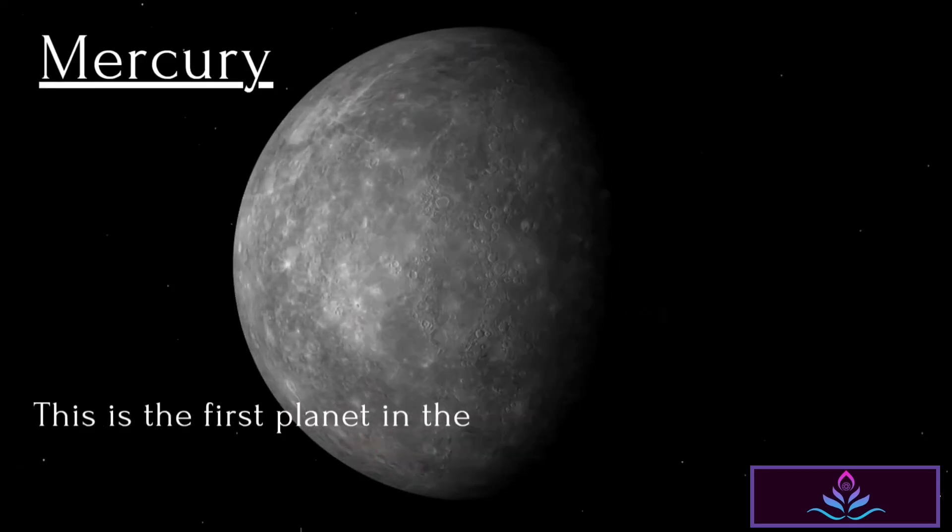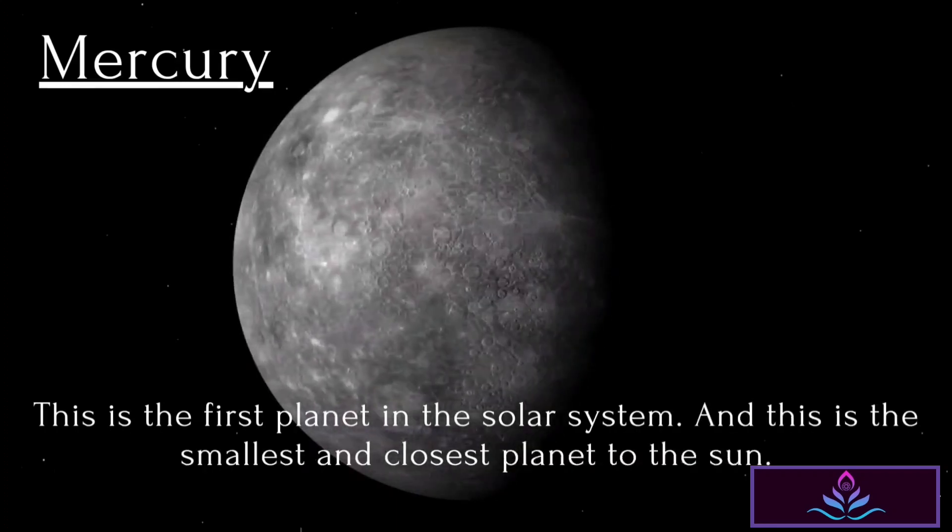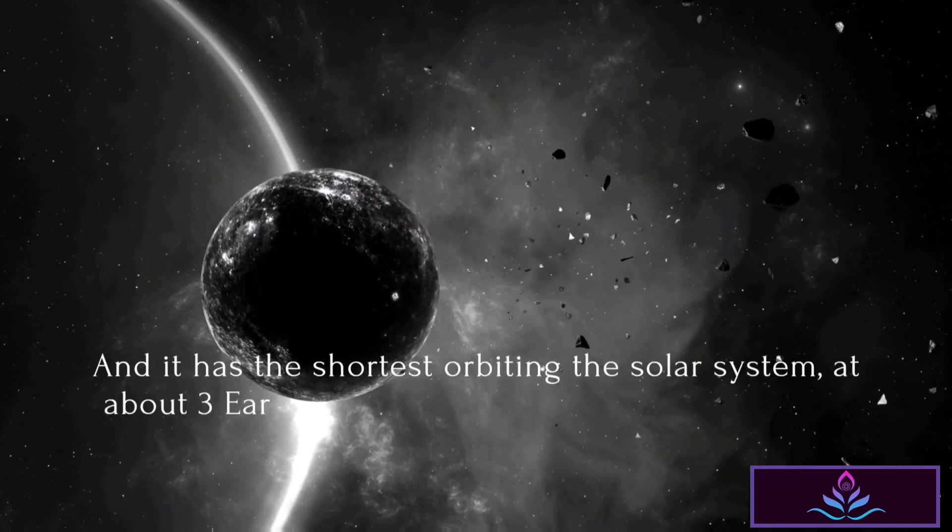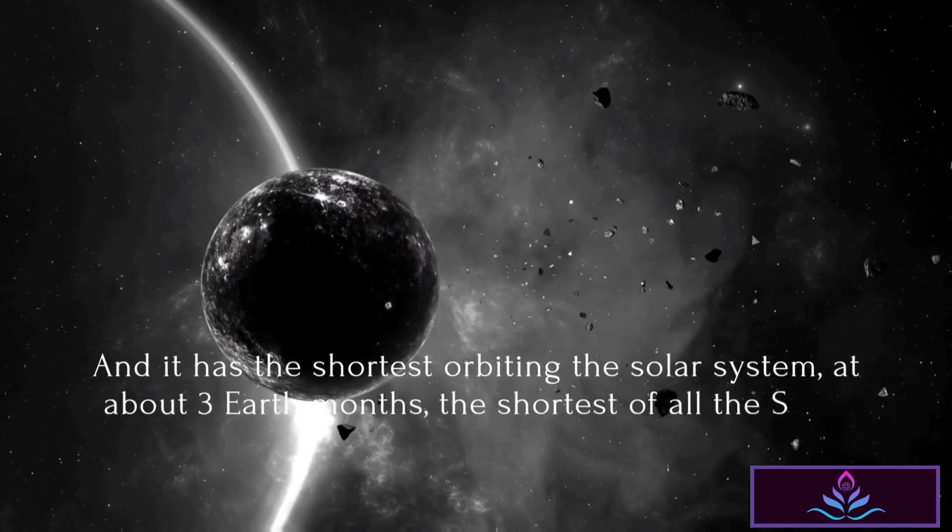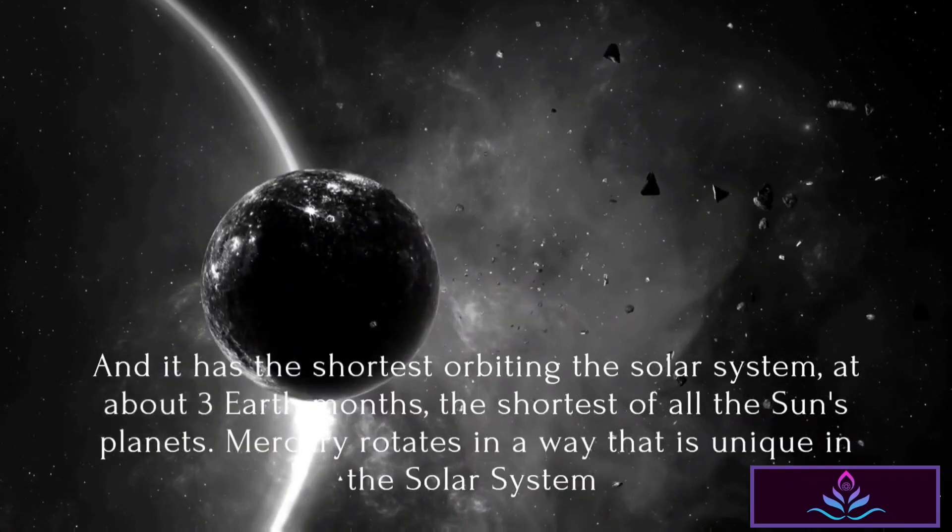Mercury is the first planet in the solar system and the smallest and closest planet to the Sun. It has the shortest orbit in the solar system, at about three Earth months, the shortest of all the Sun's planets. Mercury rotates in a way that is unique in the solar system.